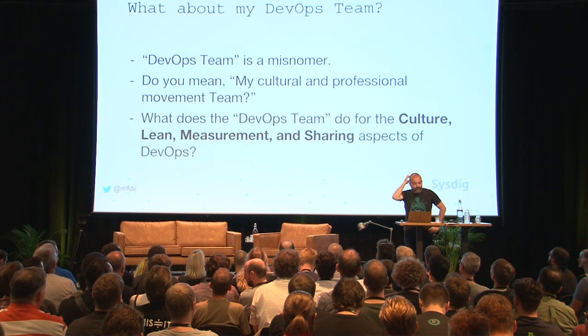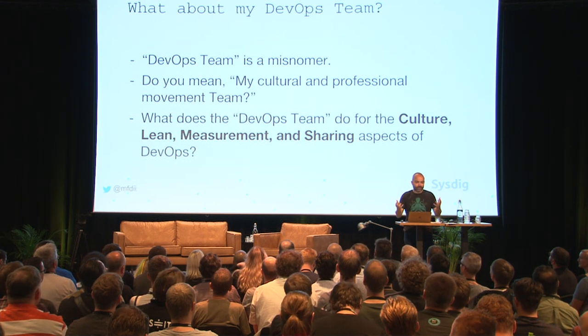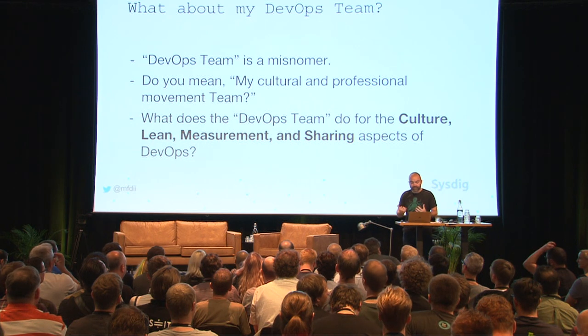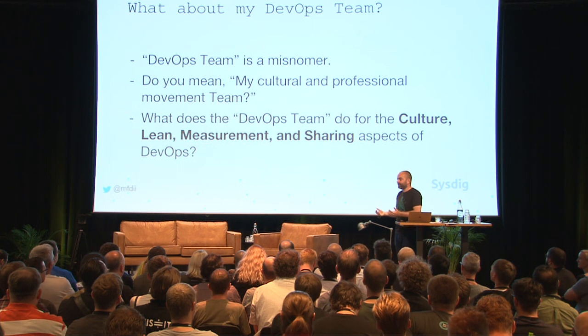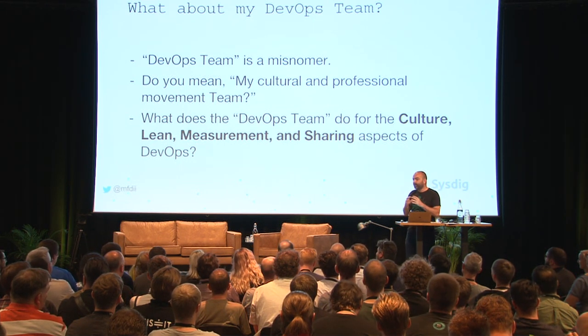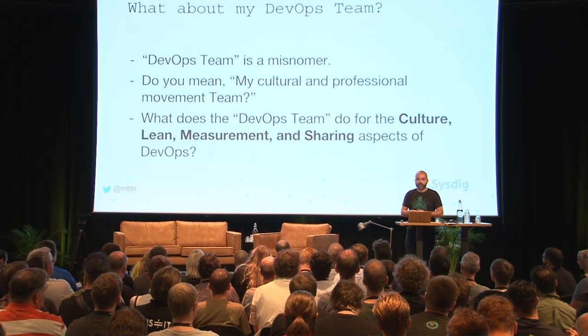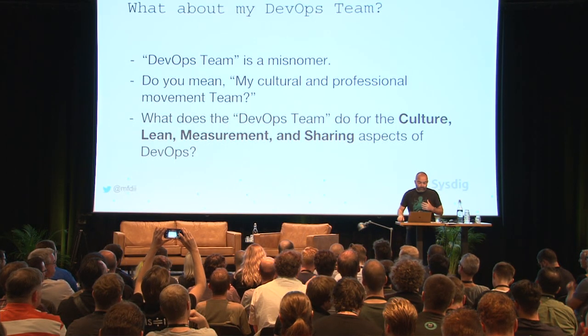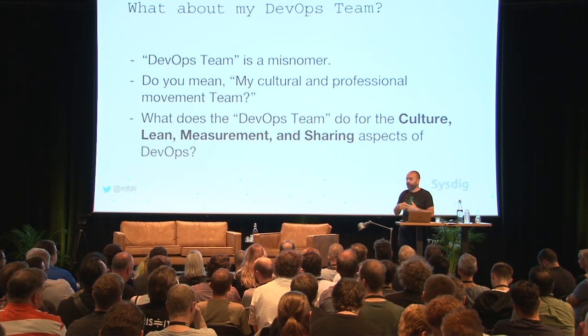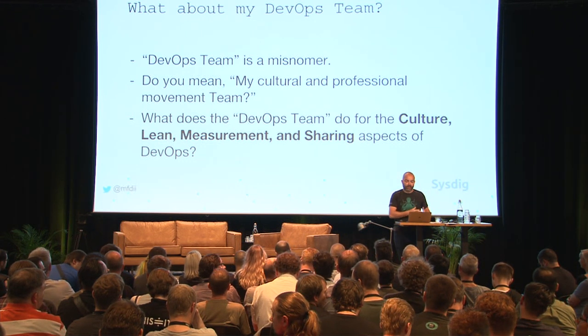You might be asking: what about my DevOps team? I thought I was doing DevOps, so I created a DevOps team. But 'DevOps team' is a misnomer. Whenever you say 'DevOps team,' ask yourself in the back of your head: 'Do I mean my cultural and professional movement team?' Then you can start to realize that calling it a DevOps team is probably not accurate unless you're also taking into account all the cultural and organizational dimensions. A lot of organizations actually just have a DevOps team that focuses on automation, infrastructure as code, and CI/CD — and they don't focus on the other challenges.